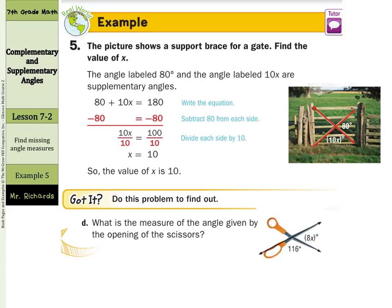Let's see if we can do the same thing. What is the measure of the angle given by the opening of the scissors? Well, we have 116 degrees here and 8x degrees here. They together form 180 degrees, so they are supplementary. So we can say, okay, 116 plus 8x is going to equal 180 degrees, since they form a straight line or supplementary relationship.